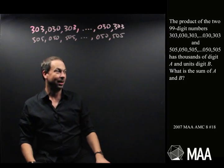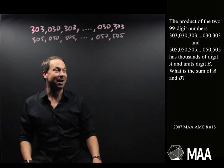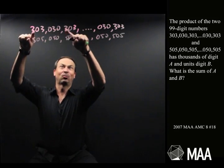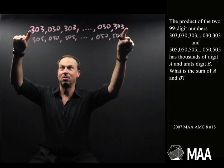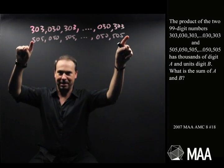It goes as follows. The product of the two 99-digit numbers—I'm not going to say them. This great big long number, 99 digits long, and this great big long number, 99 digits long.